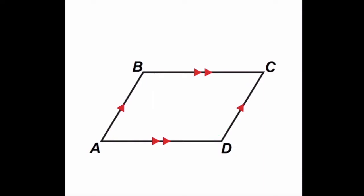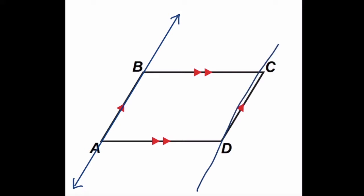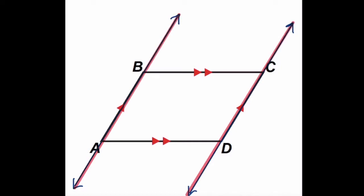Let's go back to what we remember about parallel lines cut by a transversal. If we extend line AB out to make a longer parallel line and do the same with side CD, we have two parallel lines — line AB and line CD — being cut by a transversal. The transversal in the top case is line BC, and the transversal in the bottom case is line AD.